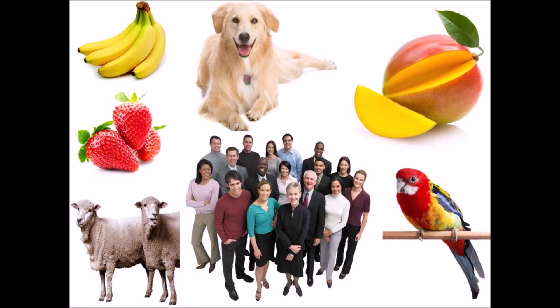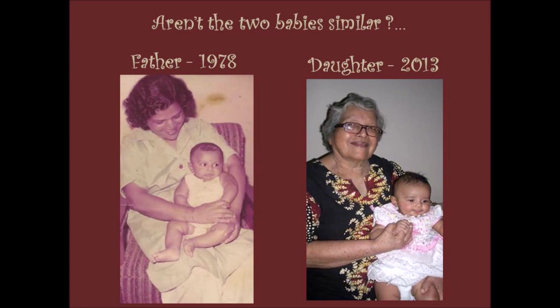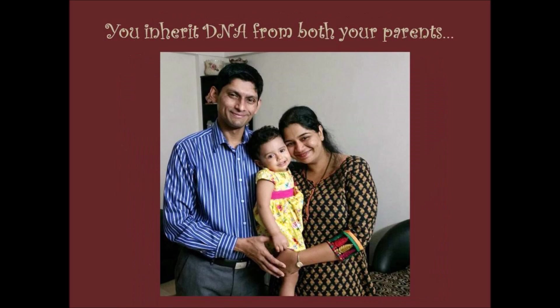Do all living things have DNA? Well, the answer is yes — plants, animals, and humans have DNA. The DNA is what makes them who they are. Have you noticed that there are so many similarities between you and your parents or some of your close relatives? This is because you inherit your DNA from your parents, and the DNA of both your parents combined to make a masterpiece — and that is you.